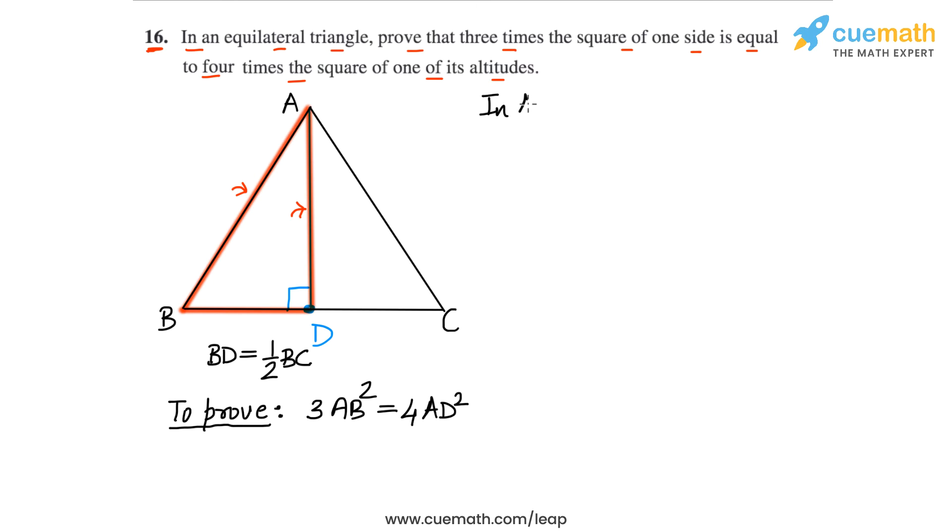So in triangle ABD, by making use of the Pythagoras theorem, we will have AB square, the square of the hypotenuse will be AD square, the square of the altitude plus BD square.